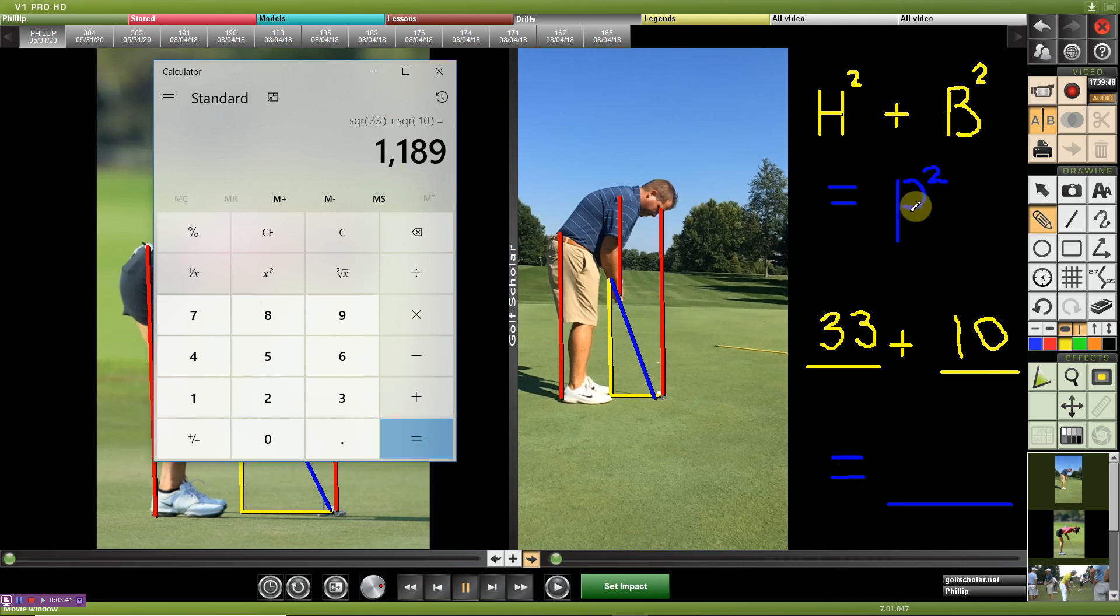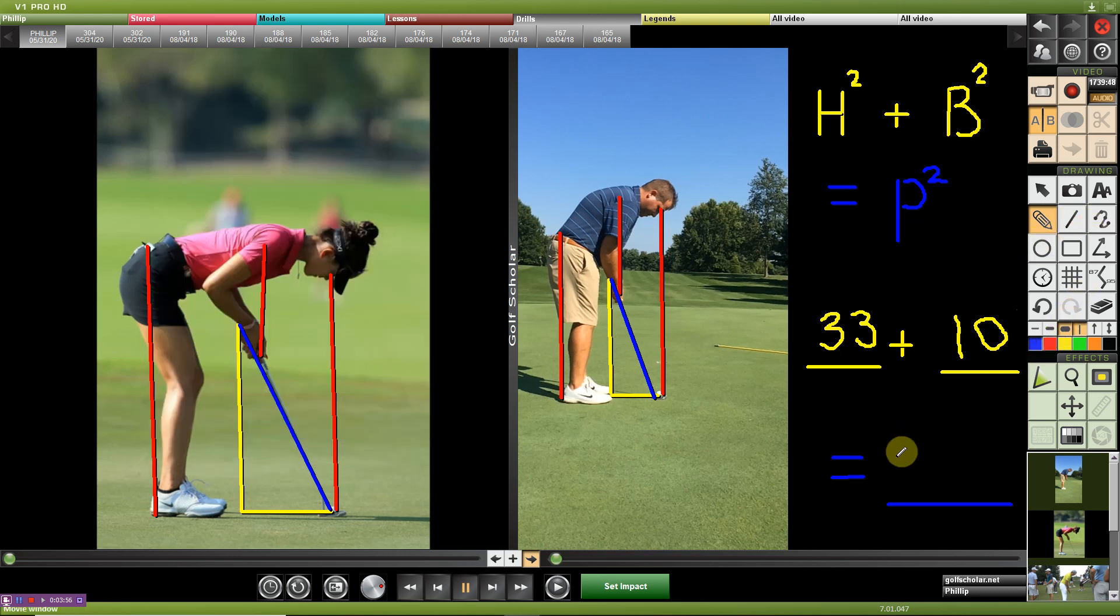That equals 1189. So in order to find P squared, we need to find the inverse operation of that, which is going to be the square root. So the square root of 1189 is 34.4. So what that's telling us here is recommending a putter length of 34.4, or that would be like 34 and a half inches.